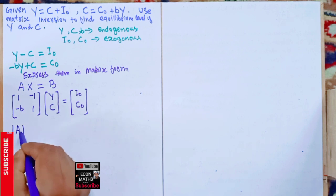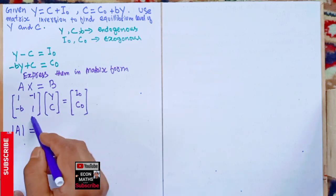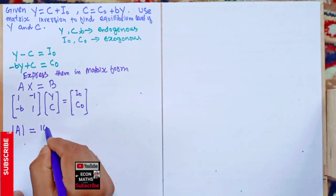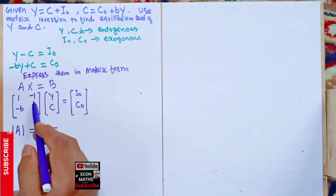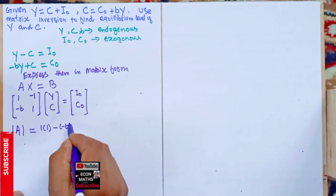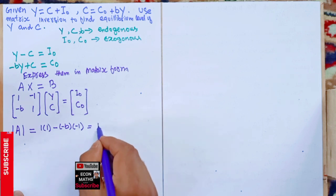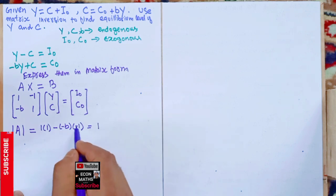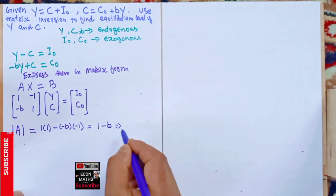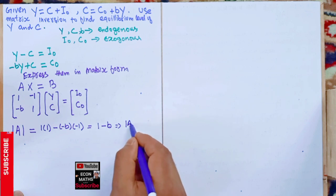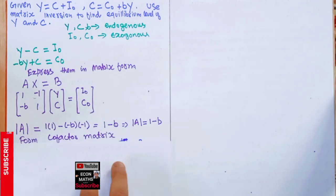We now find the determinant of the coefficient matrix. Multiplying the elements on the principal diagonal: 1 × 1 = 1, and subtracting the product of the non-principal diagonal elements: (−b) × (−1) = b. So the determinant is 1 − b.